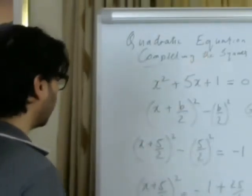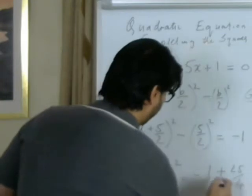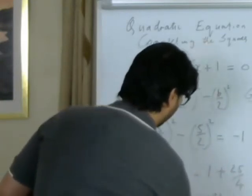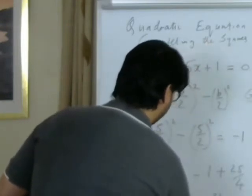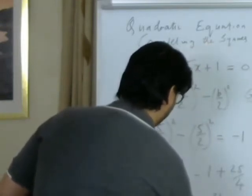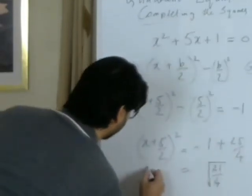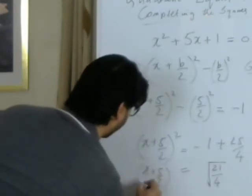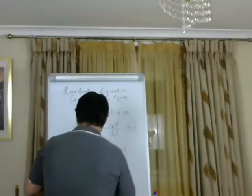If we solve this, we get minus 4 plus 25, which gives us 21 over 4. This will then be square rooted, and we're left with x plus 5 over 2 on the left side.